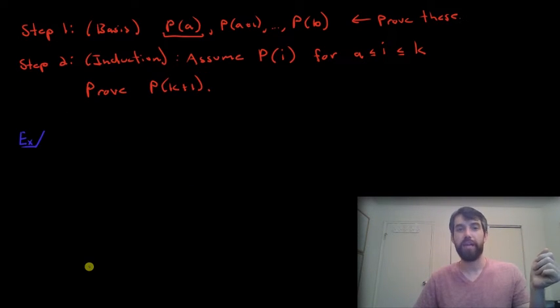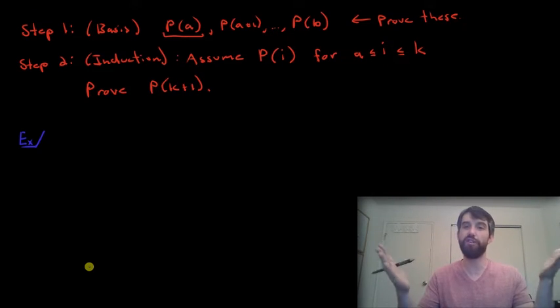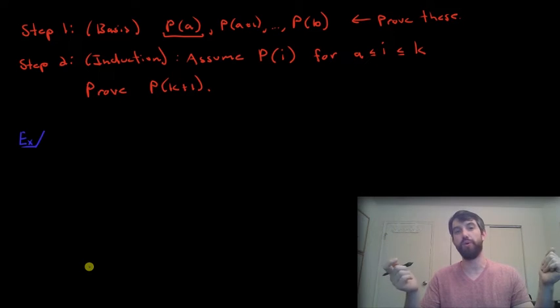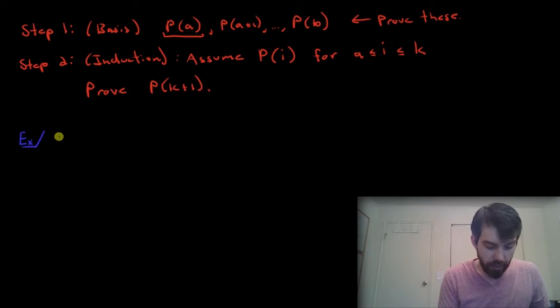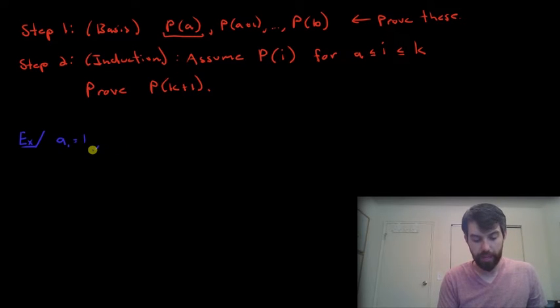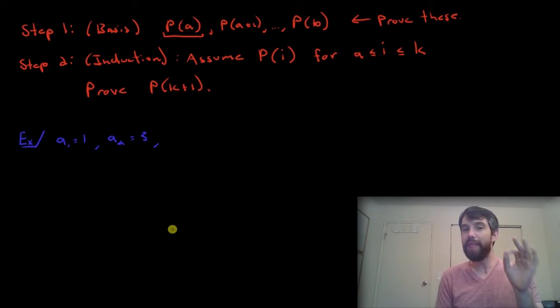So let's see an example. This example is going to be some property about a particular sequence. So let me define the sequence first. This is the sequence where the first term is just equal to the value of 1. The second term, a2, is going to be equal to the value of 3. And then if I want to speak about the general term, it's going to work like this.